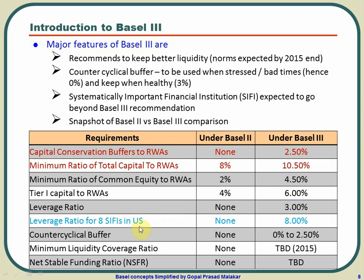For the 8 GSIBs — Systemically Important Financial Institutions — identified in the US in 2013, it was mandated that they keep a leverage ratio of 8%. This means if they are putting 8 million dollars they can go up to 100 million, or if putting 4 million dollars they can go only up to 50 million. The counter-cyclical buffer, which was not in BASEL 2, became 0% during stress and 2.5% when the bank is healthy.